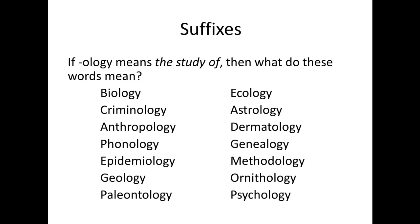Phonology: phono is sound or hearing — in linguistics, the sound of human language — so we have the study of that. Epidemiology is the study of epidemics. Geo means earth, so geology is the study of earth. Paleo means dinosaur era or prehistoric, so paleontology is the study of dinosaurs. Ecology is the study of life in the world. Astrology involves the stars and how they work. Derma means skin, so dermatology is the study of skin. Genealogy is the study of lineage. Methodology is the study of methods. Ornithology is the study of birds. And psych, or mind — psychology is the study of the mind. You see how easy it is to figure that out once you know -ology.